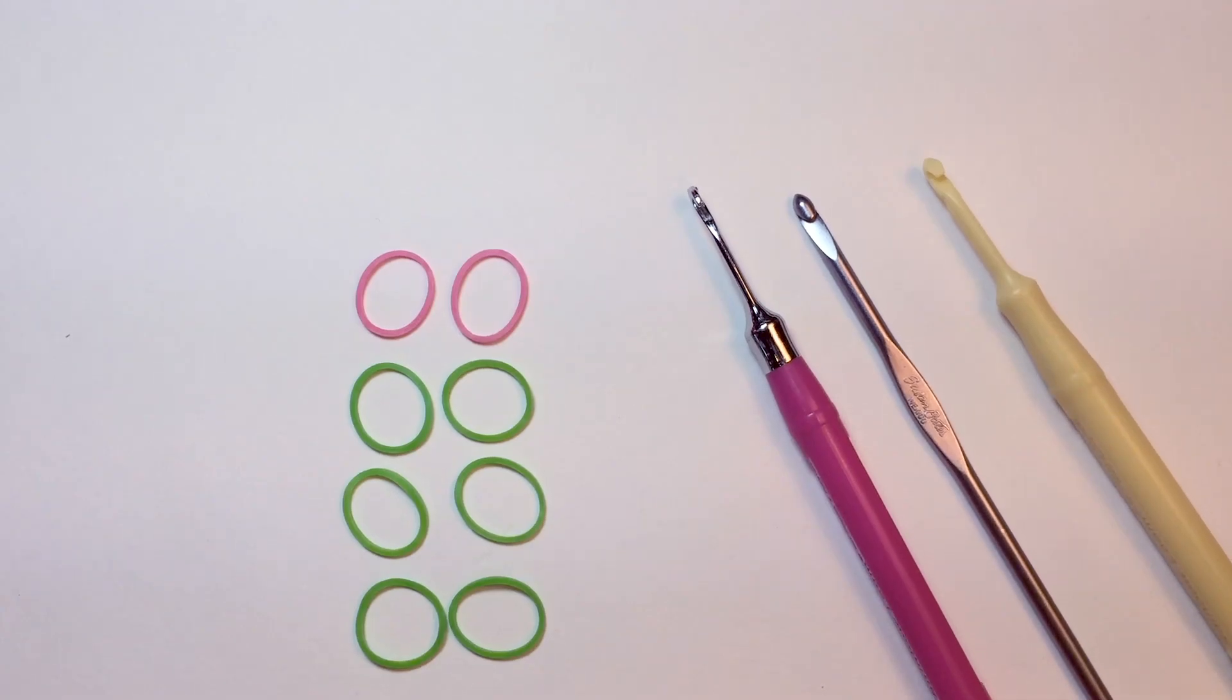To make the ring, you will need two rubber bands in the color you want the flower to be, and six for the color of the leaves and branches. You will also need a hook, either the hook that came with your loom kit, or a regular crochet hook.